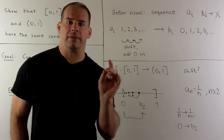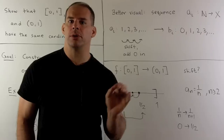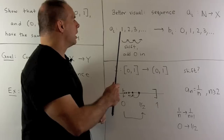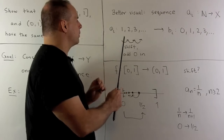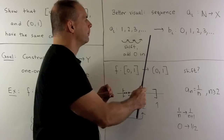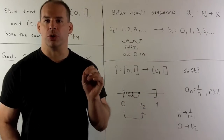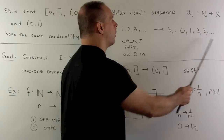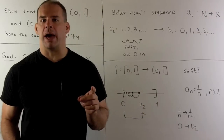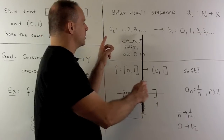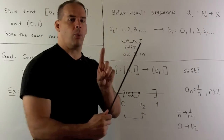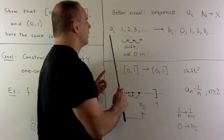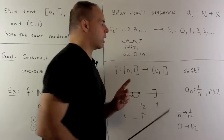A useful way to think of countably infinite sets is in terms of sequences. The natural numbers form the sequence 1, 2, 3, and so on. The natural numbers including 0 give the sequence 0, 1, 2, 3, and so on. Our previous map just takes the sequence, shifts each term to the right by 1, and then sticks in a 0 at the front. That's a nice way to see that one-to-one correspondence.